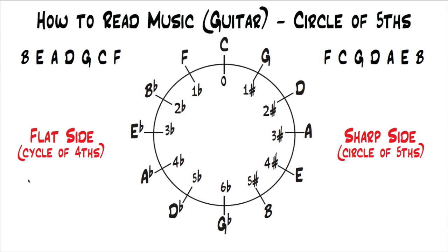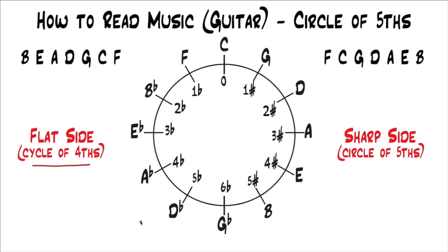Others don't call it the cycle of fours — they say you're going in fifths in reverse. From B to F is a fifth, from E to B is a fifth, etc. But I think calling it the cycle of fours is clearer, and you'll run into this term often, especially if you get into jazz. So I think it's important to see this as moving in fours.